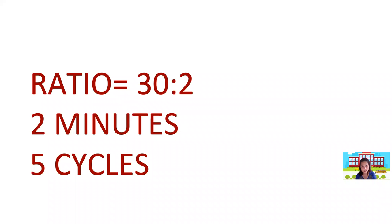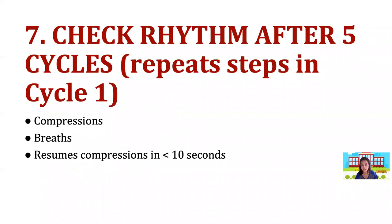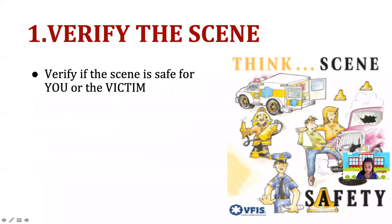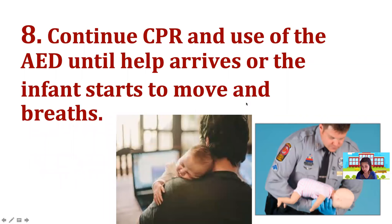The ratio for infant one-rescuer BLS is also 30 to 2, for two minutes — five cycles. After five cycles, check rhythm, pulse, and breathing again. If there is pulse and breathing, position the patient in the recovery position, which can be performed with the infant on their side to allow secretions to drain.